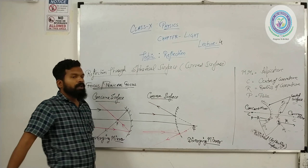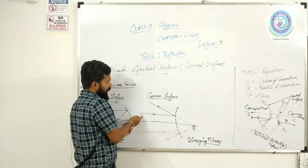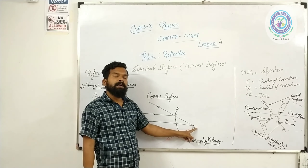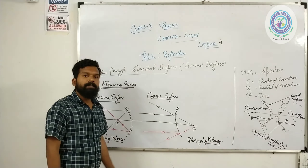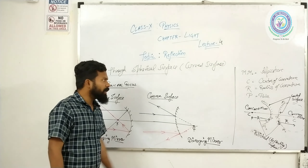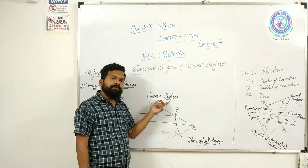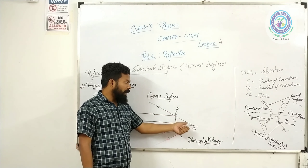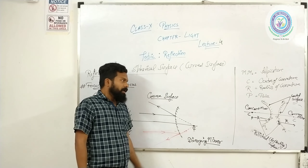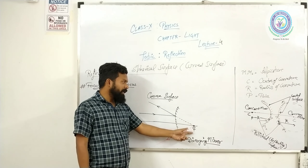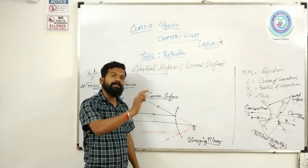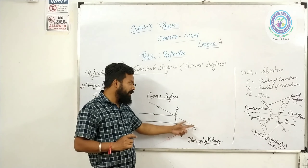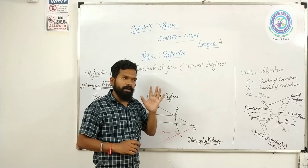Second है हमारा convex surface। Convex surface के लिए — after reflection, the reflected rays appear to come from a point, and that point is placed on the principal axis. That point is known as the principal focus of a convex surface. किसी convex surface का principal focus वो point होता है जहाँ पे after reflection हमको लगता है कि reflected rays किसी एक point से निकल रही हैं — appears to come from a point — और यह point principal axis पे lie करेगा।